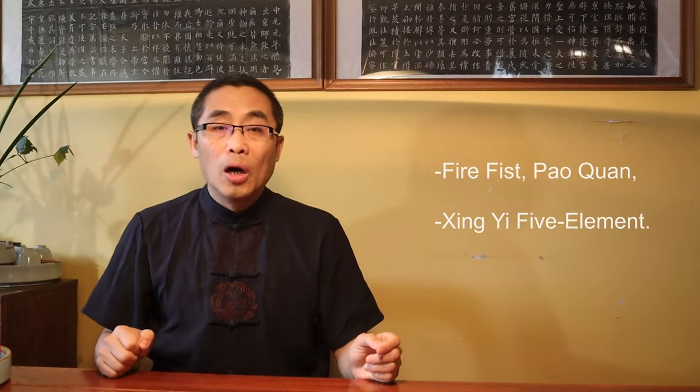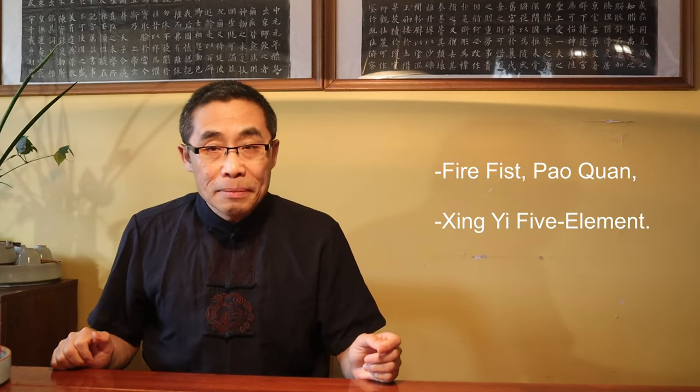For example, many martial art movements, such as Fire Fist or Pao Chuan in Xing Yi Five Elements Training, require that both elbows extend slightly to the side way in order to generate martial energy. Let's check out some old photos of Fire Fist of Xue Dian and Sun Lu Tang. You can see the obvious extended motion of their shoulders and elbows.